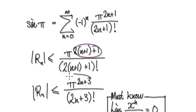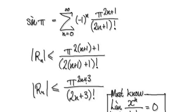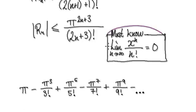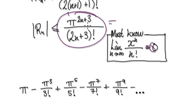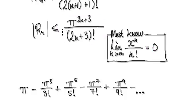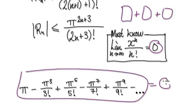Tidy this whole thing up — it becomes this simplified expression. And remember, this is very similar to the limit form we discussed: a constant to the power of n over n factorial, which tends to zero. So as you sum up all the terms to infinity, the remainder will head to zero. Therefore, we know that this series here must equal zero.